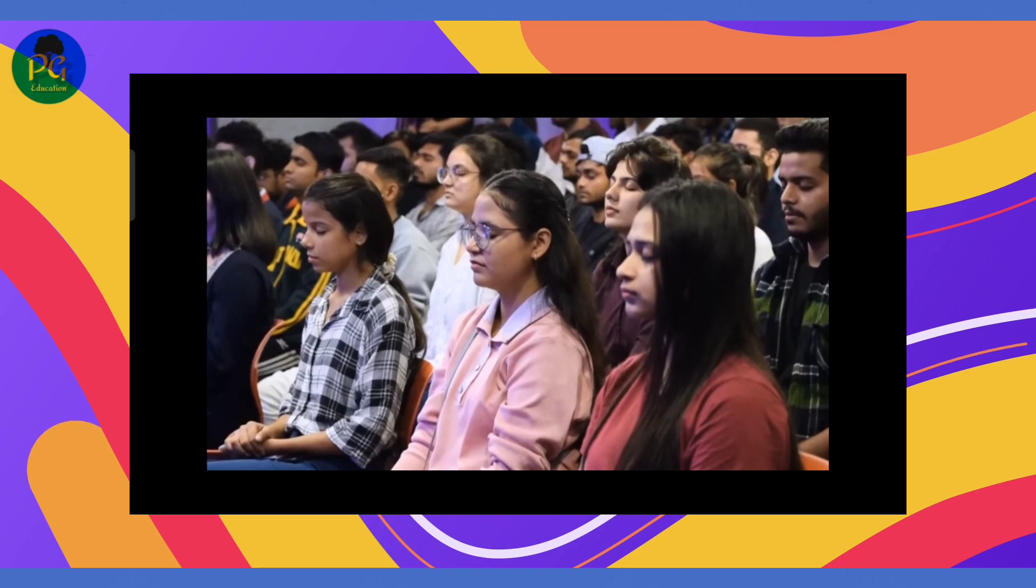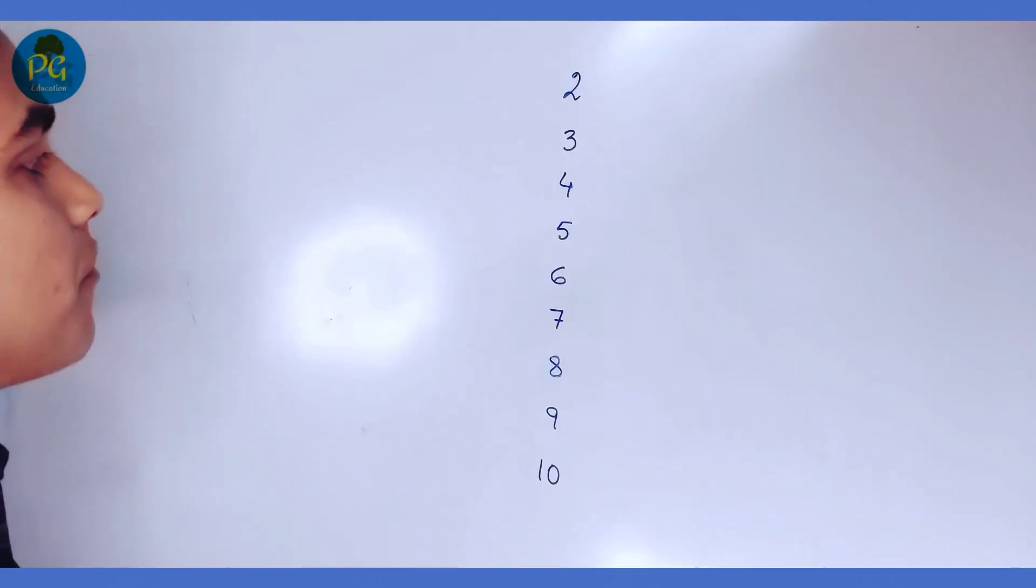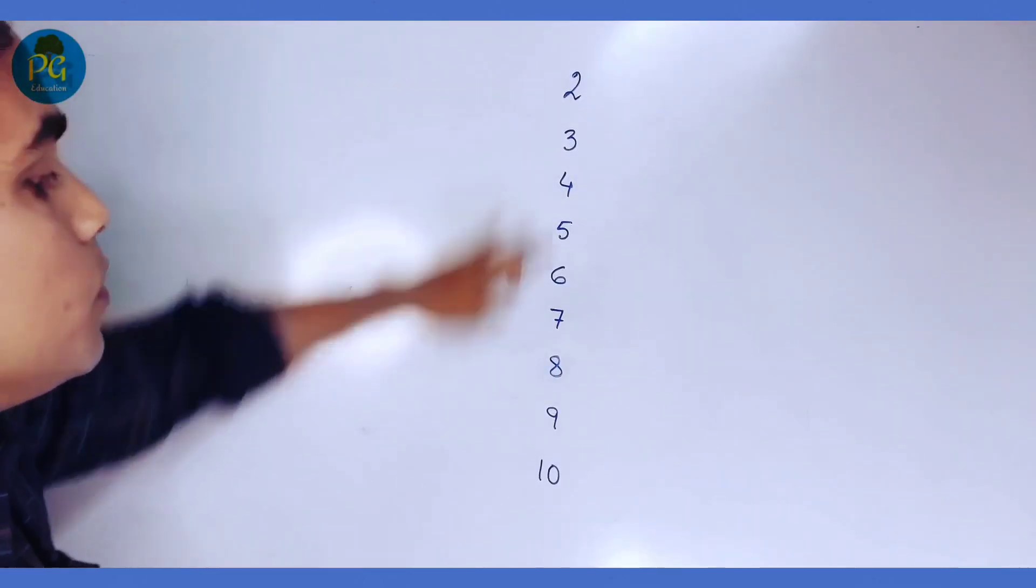First of all, think about a number, any number from 2 to 10, even or odd. In this trick, we have to first choose a number from 2 to 10. This number, multiply by 9.